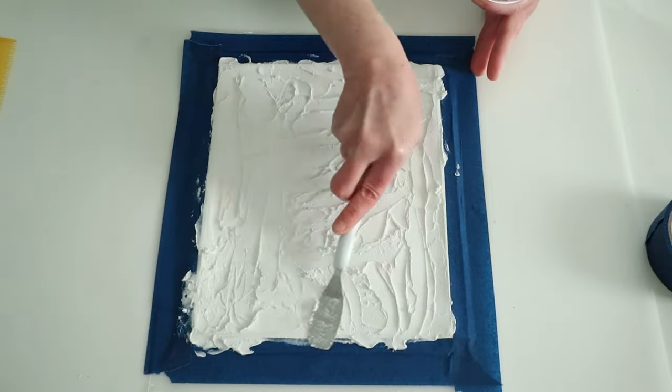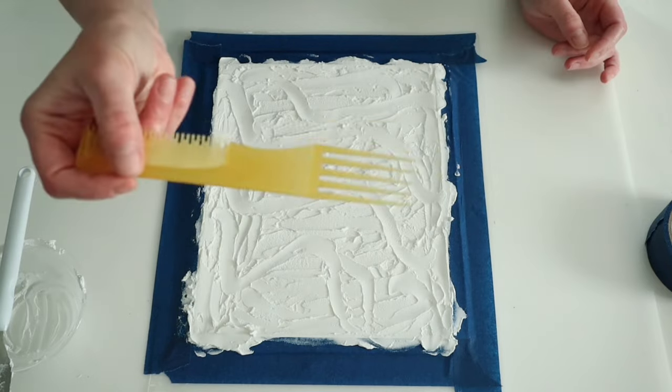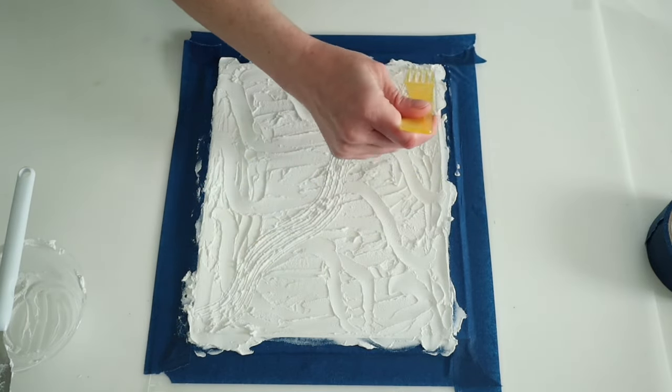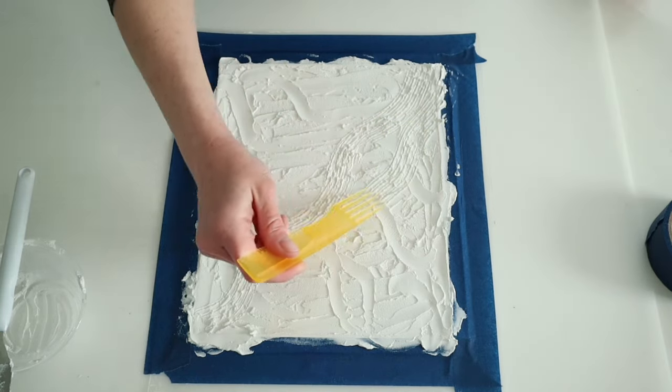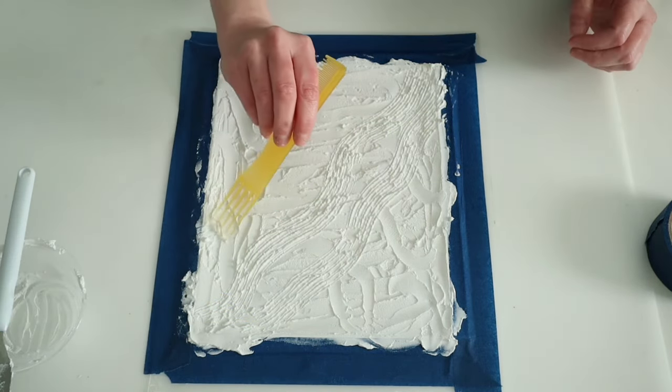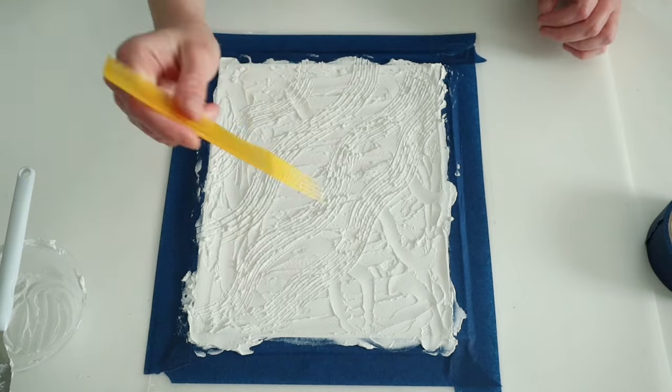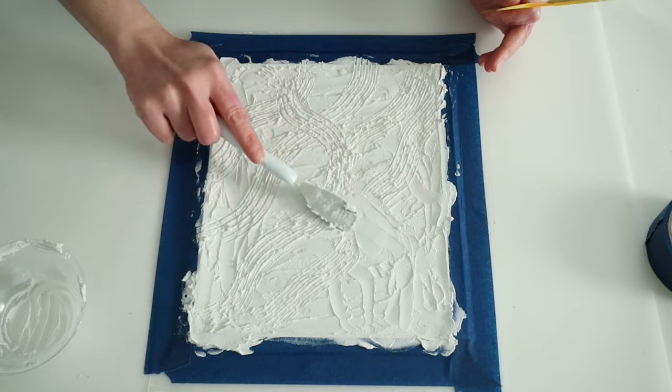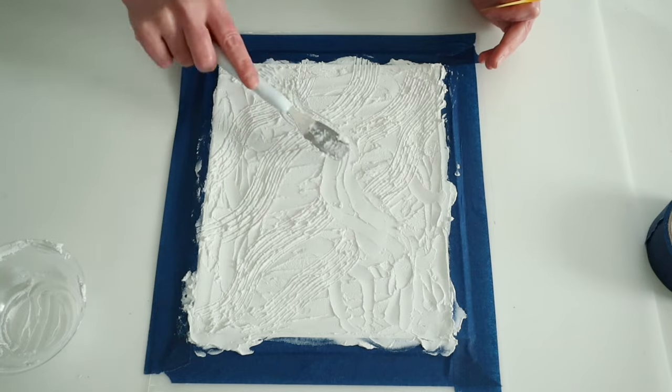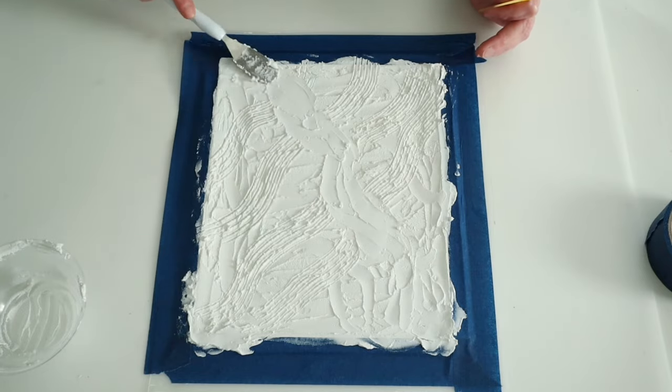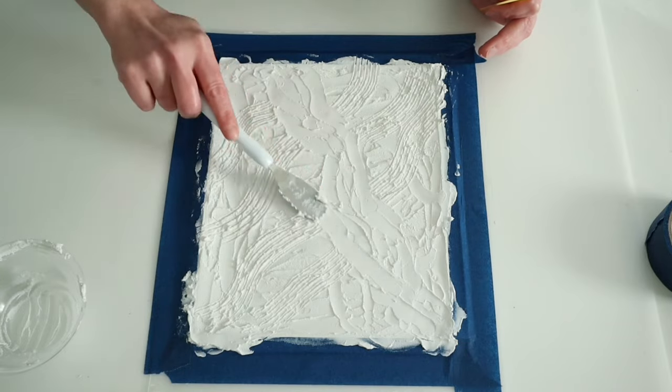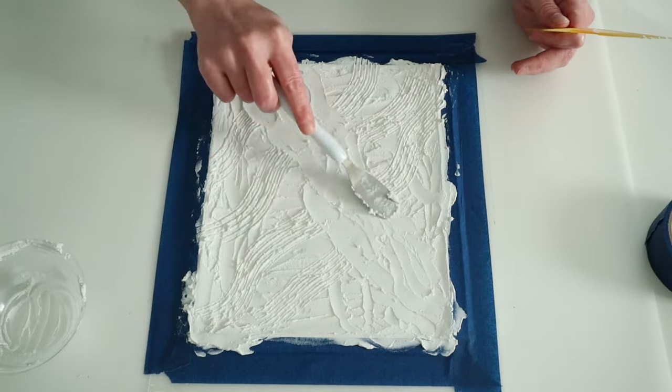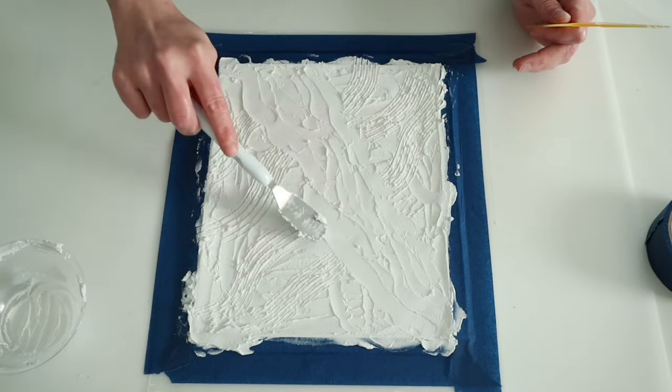Now, like I said, you can do any abstract design with this, and I decided to use this little comb pick and kind of run it through the spackling a few times. And remember, if you end up not liking something that you are doing, you can just go ahead and take your spatula and just remix that spackling up, which is exactly what I was doing here. I ended up not liking something I did. So as long as that spackling is still wet, you can always mess with it some more.